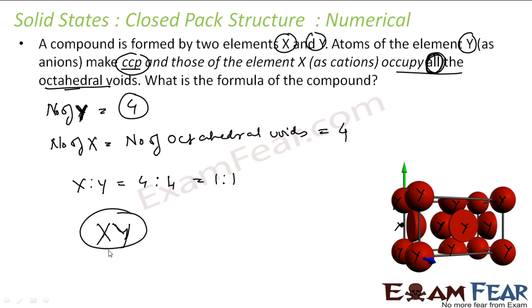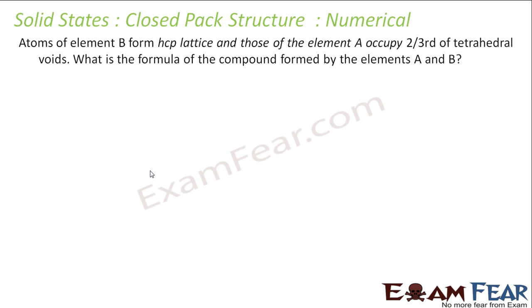So, the number of Y in CCP is 4, and the number of X equals the number of octahedral voids, which is also 4 — since the number of octahedral voids equals the number of atoms. Therefore X to Y ratio is 1 to 1. Now the next question: atoms of element B form an HCP lattice and A occupies two-thirds of the tetrahedral voids. Please note, not all the tetrahedral voids — only two-thirds. We need to find the formula.